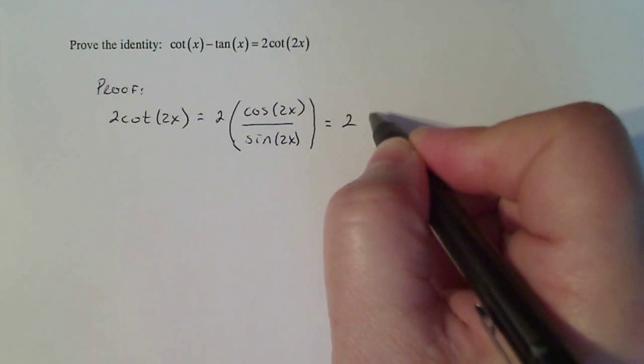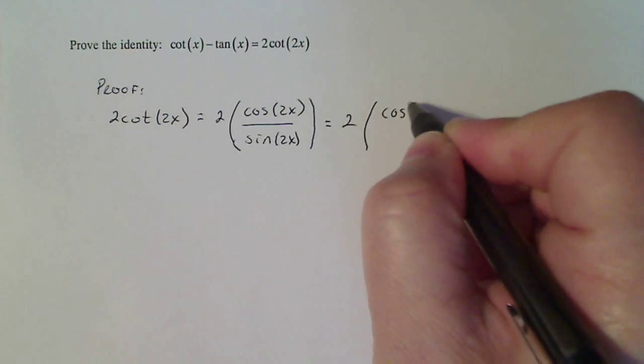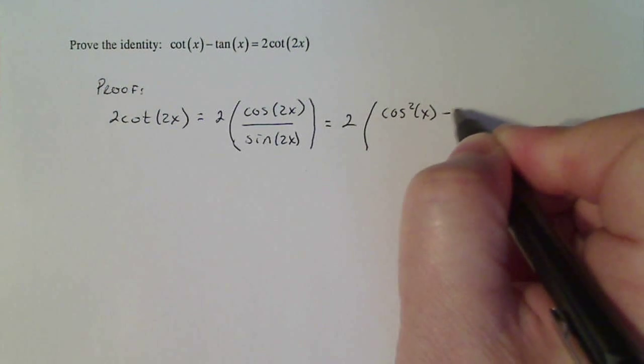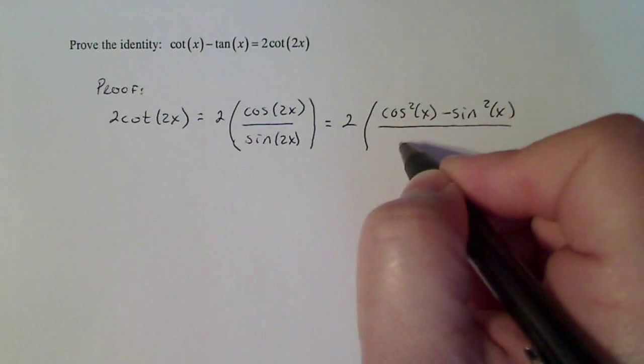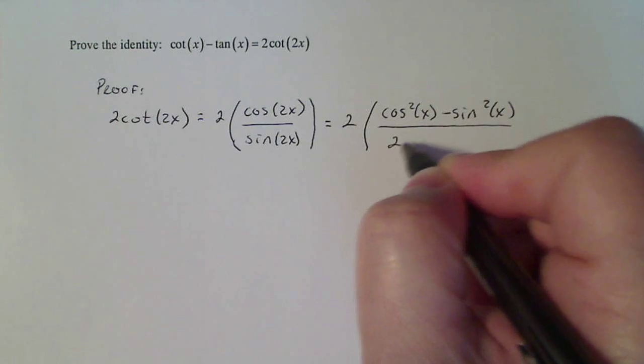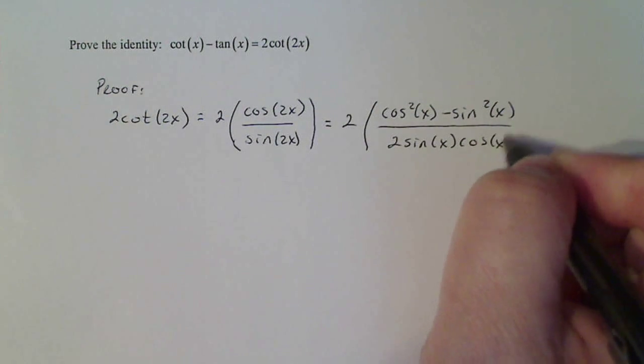I'm going to use trig identities to rewrite cosine of 2x as cosine squared x minus sine squared x, and I'm going to use a trig identity to do 2 sine x cosine x for sine of 2x.